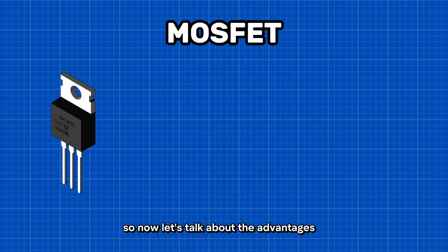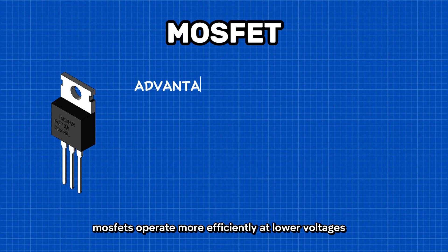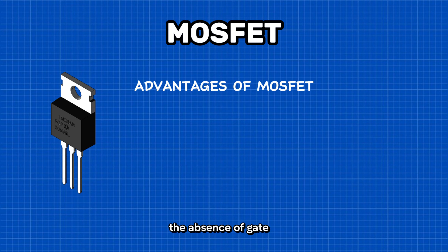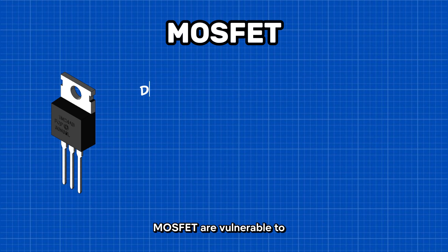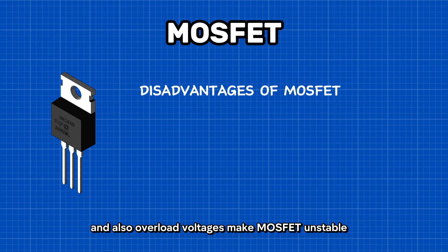The first advantage of MOSFET is that MOSFETs operate more efficiently at lower voltages. The second advantage is that the absence of gate current results in high input impedance, producing high switching speeds. The disadvantages of MOSFET are that MOSFETs are vulnerable to damage by electrostatic charges due to the thin oxide layer, and overload voltages make MOSFETs unstable.